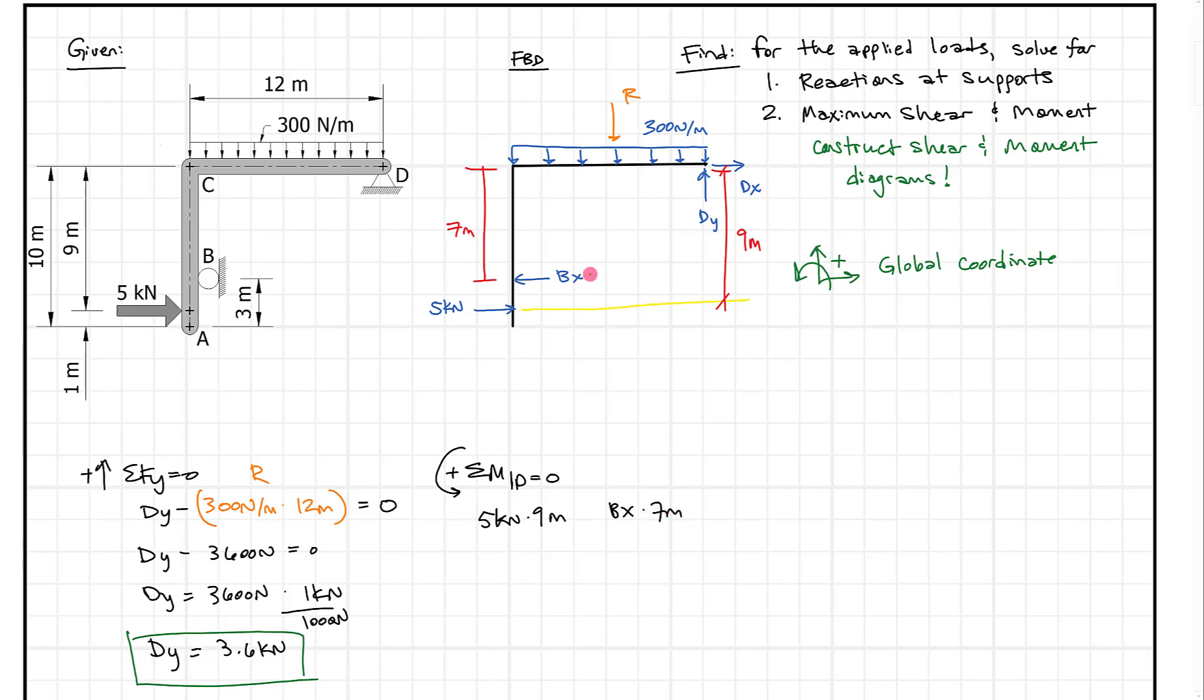Lastly we have R, which will cause some moment. R causes rotation in the positive direction, matching our positive sign convention, so it's a positive value. Add R, which we figured out was 300 times 12, or 3.6 kilonewtons, times the distance between the line of action of that force and point D, which is just half of 12, or six meters.